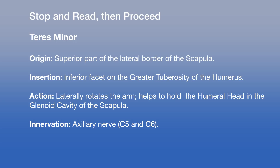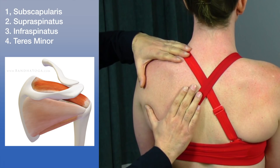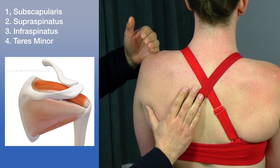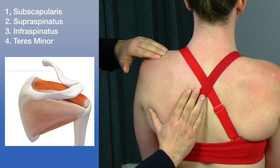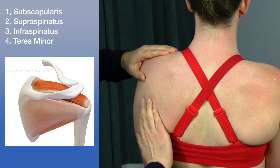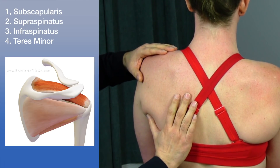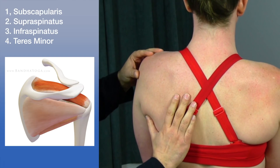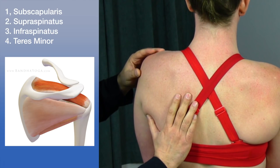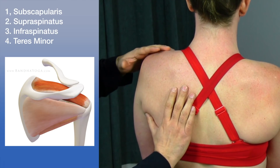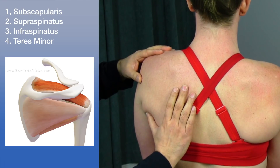Collectively, these four deep muscles — the subscapularis anteriorly, supraspinatus, infraspinatus, and teres minor — are called the rotator cuff muscles. Their tendons surround and reinforce the shoulder joint capsule on three sides. Apart from mobilizing the humerus, they play an important role as active ligaments in providing stability to the joint.